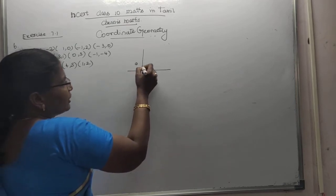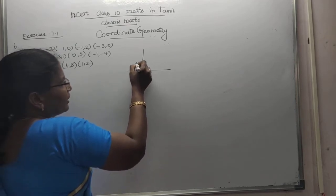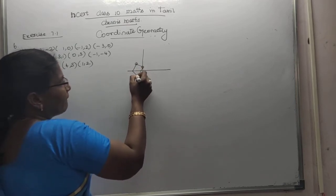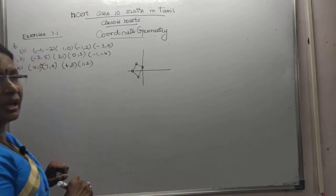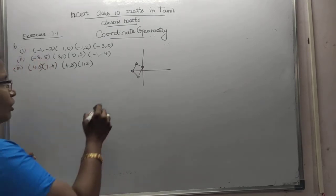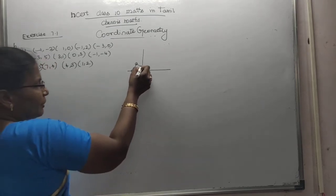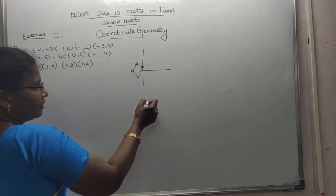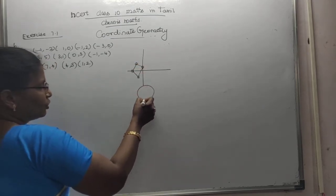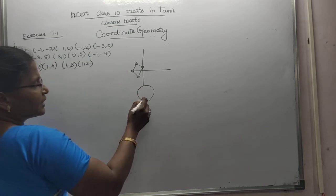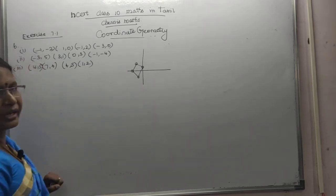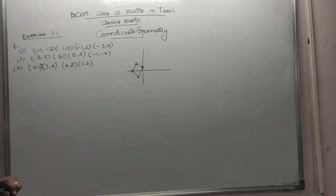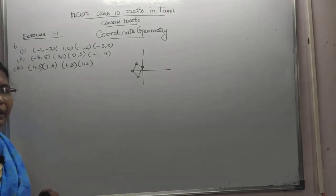Now, you come here. This is a quadrilateral. Minus 3, 0. Then you have all points here. That's how it is done. So, this is the anti-clockwise direction. Therefore, the points are correct.